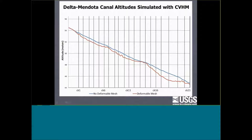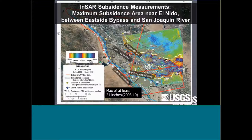This is just a profile along the canal. Blue is the designed elevation, and red is how it looked in 2010. You can see there are pinch points at several locations — another way to visualize the problem.